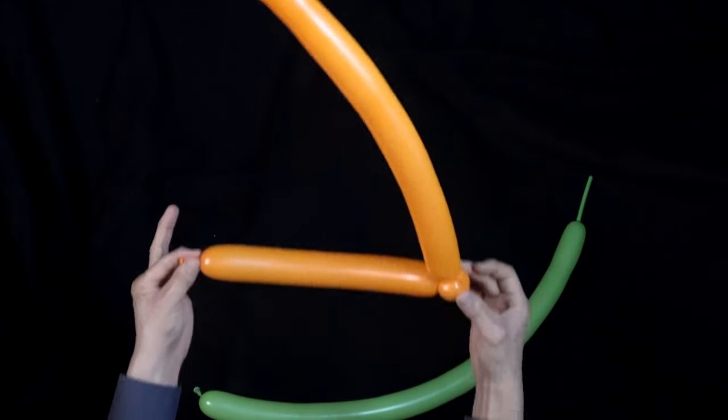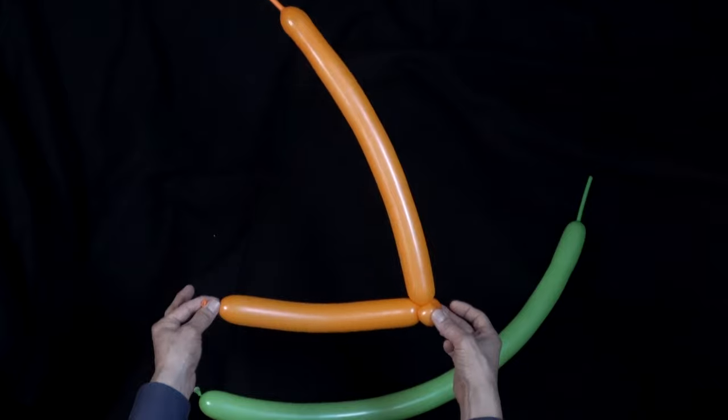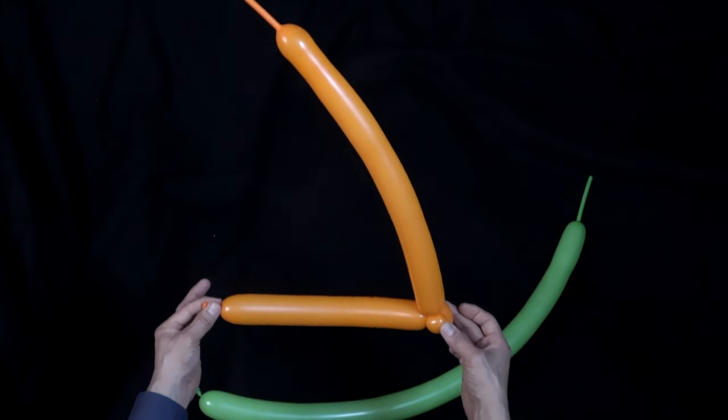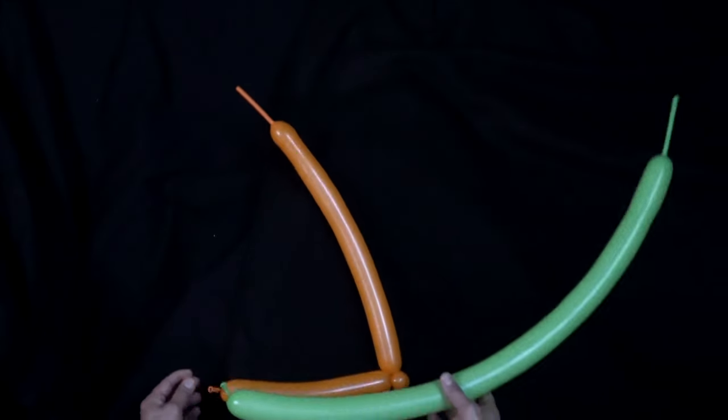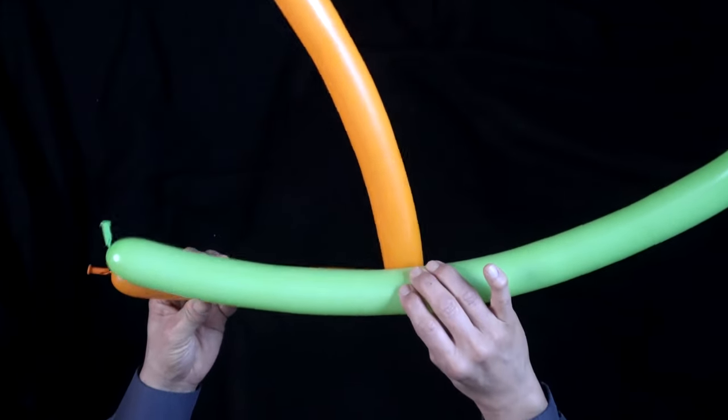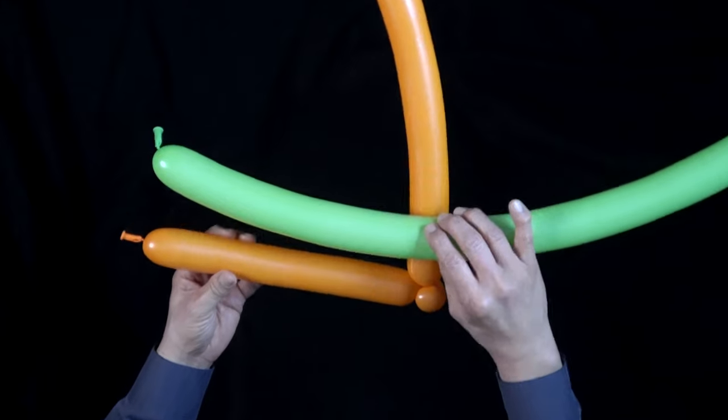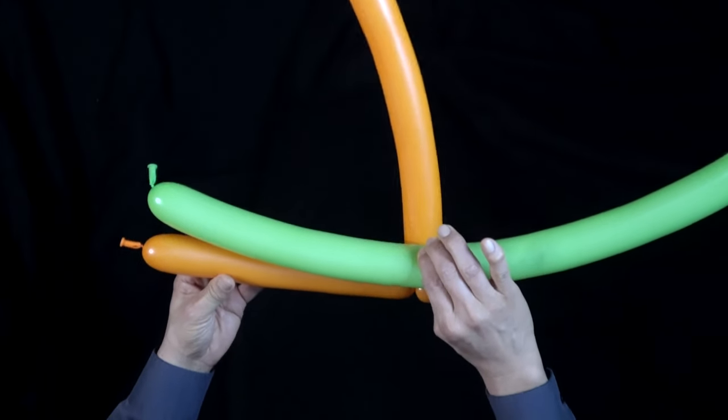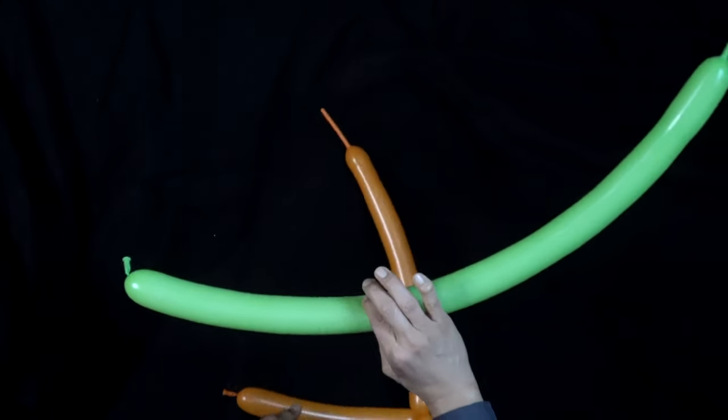And you have half of your two balloon jester hat. Let's do the same with the other one. Now you want the second balloon to match here as close as you can, but you may have to adjust depending on the person you're making the balloon for.